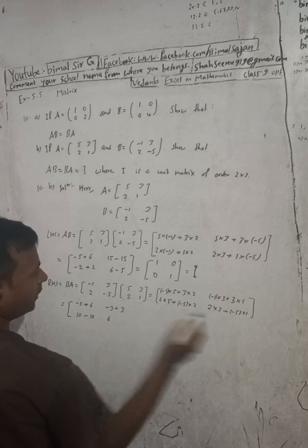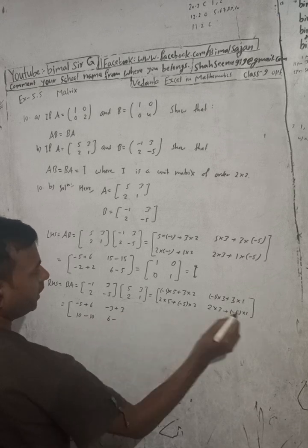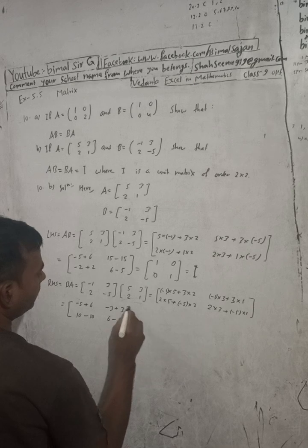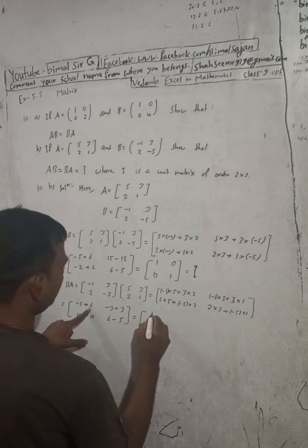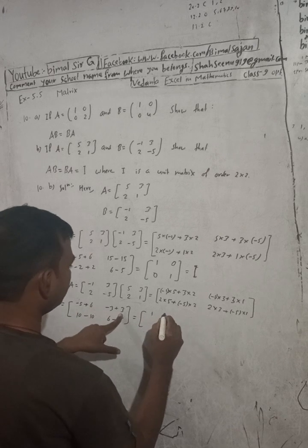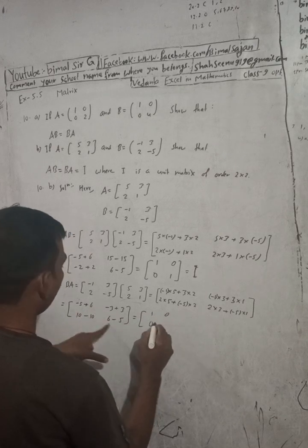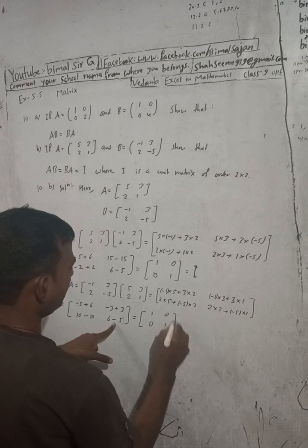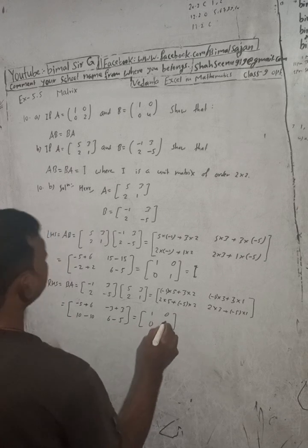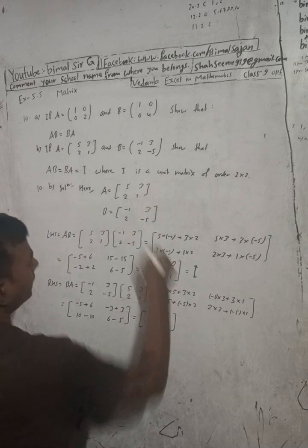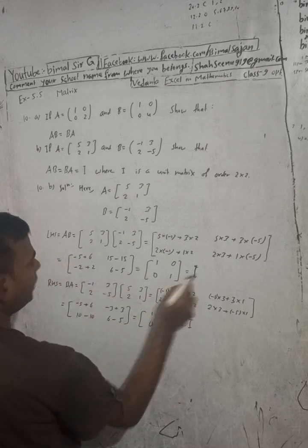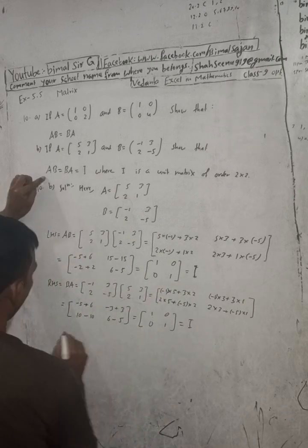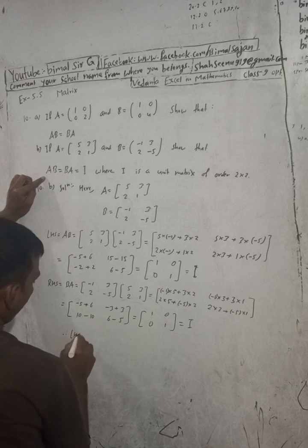So we get: -5+6=1, -3+3=0, 10-10=0, 6-5=1. This is also the unit matrix I. So LHS equals I and RHS equals I, therefore LHS equals RHS.